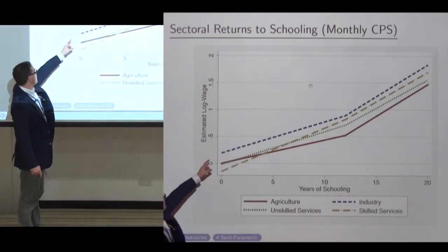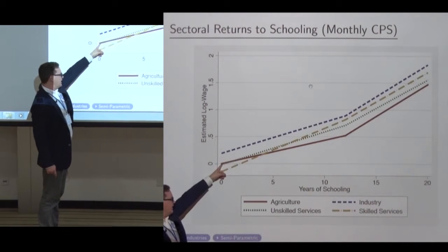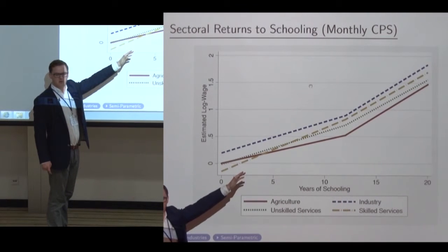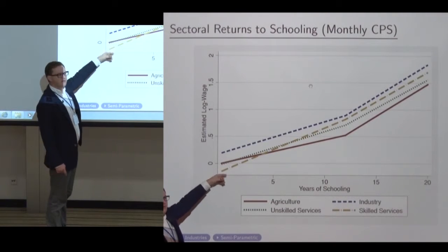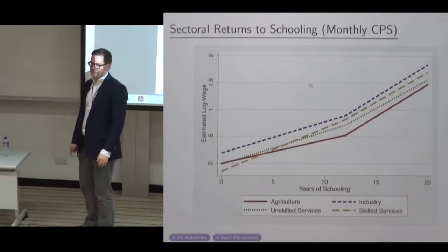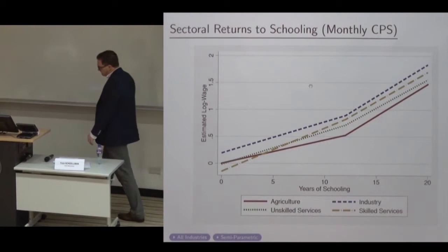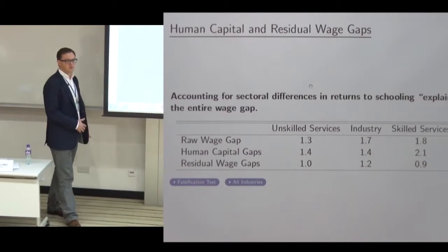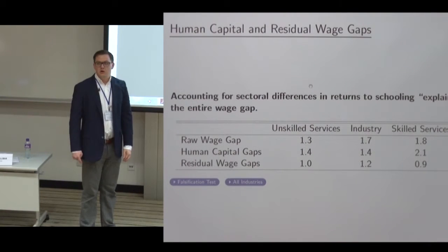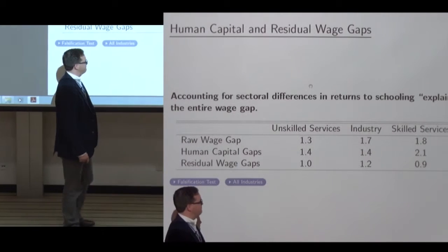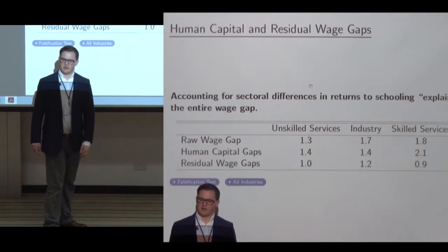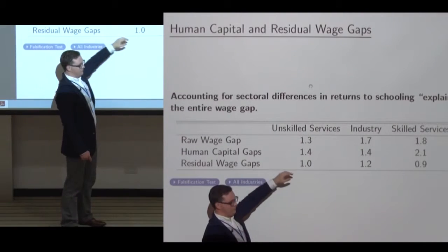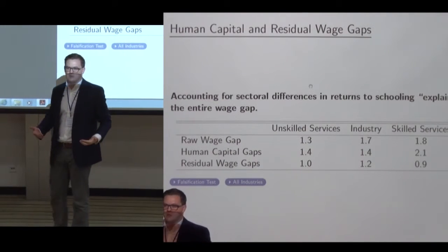Here in red is agriculture, which is our default sector. Even what I call unskilled services has a very similar intercept to agriculture, but the return to schooling is much higher. It's much, much higher in skilled services. The differences between agriculture and industry in how valuable education is are not large. If I construct a measure of human capital that accounts not just for years of schooling but also for the relative return to schooling across sectors, that measure accounts for basically all of the wage gaps. The human capital gaps are roughly 1.4, 1.4, and 2.1, so the unexplained wage gap is roughly one — meaning roughly wage parity with not much left to explain.